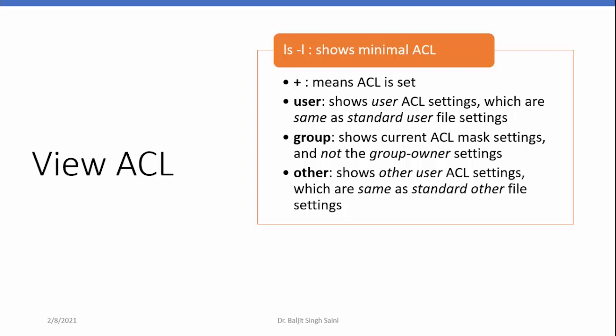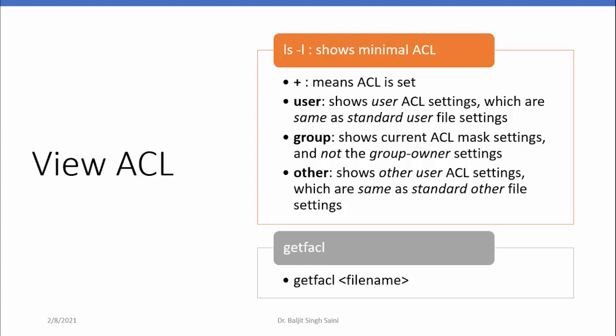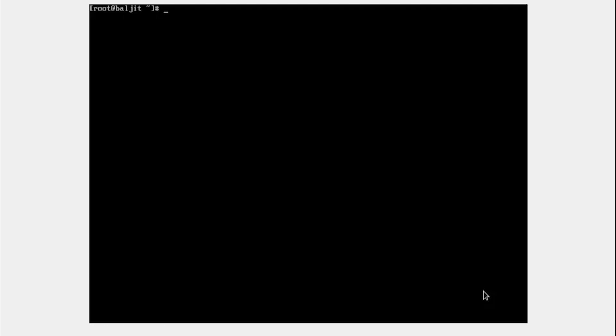The permissions under others are the standard other permissions. The correct command to view the ACL is getfacl — you write getfacl followed by the file name. Let us take an example.